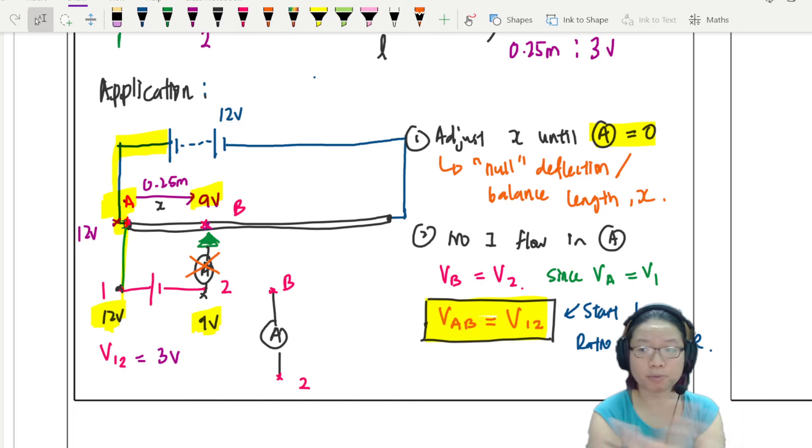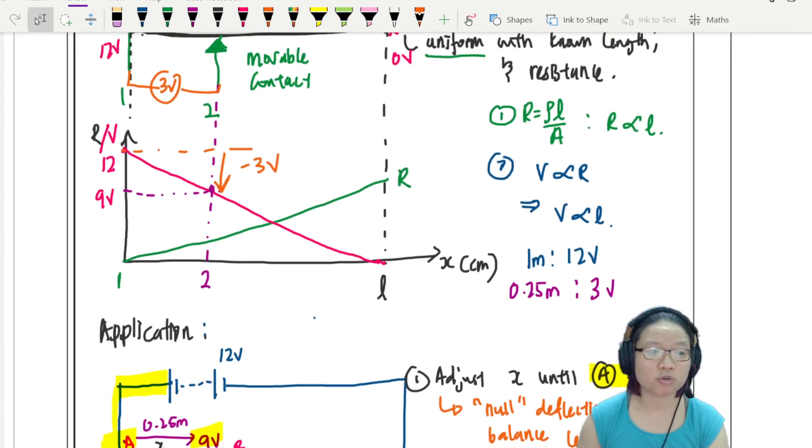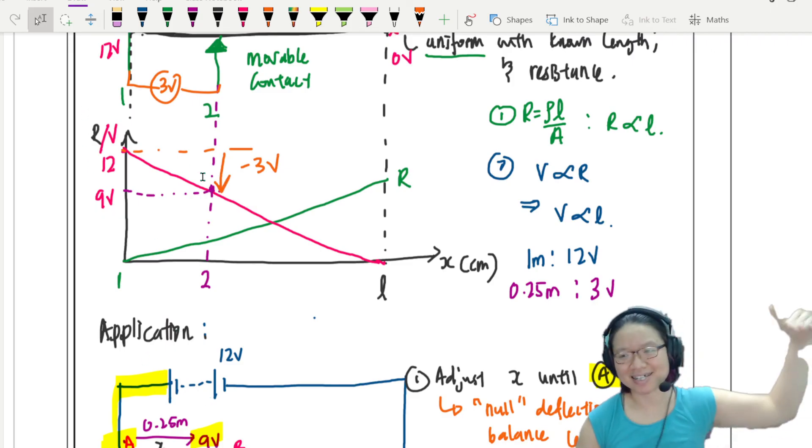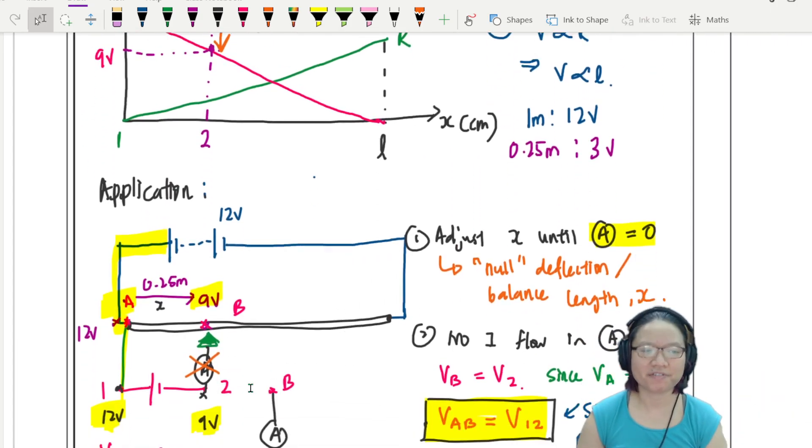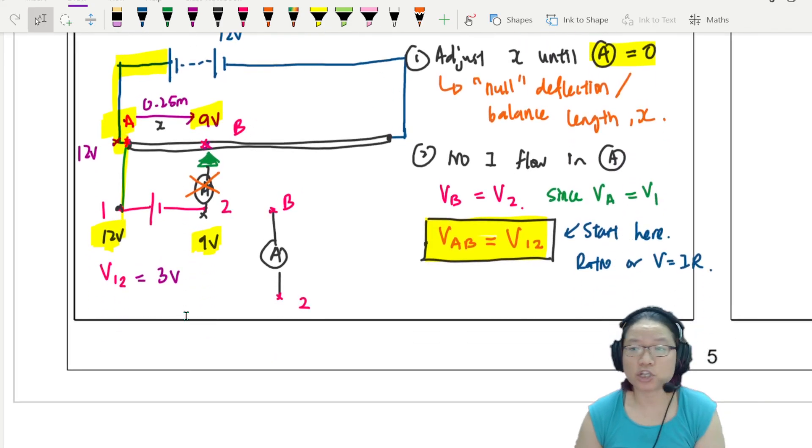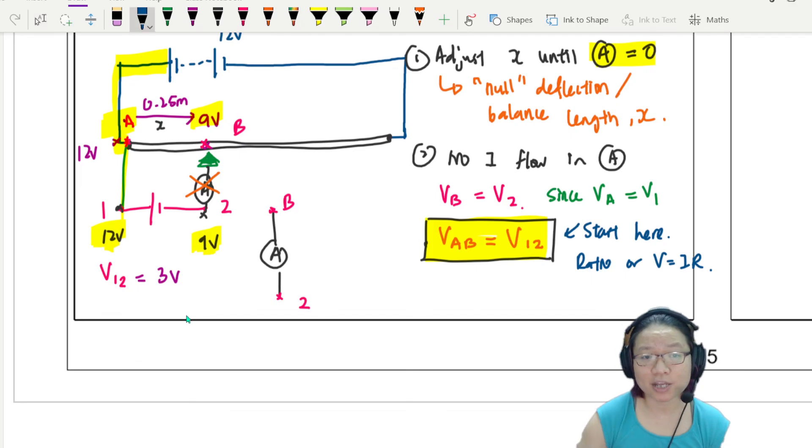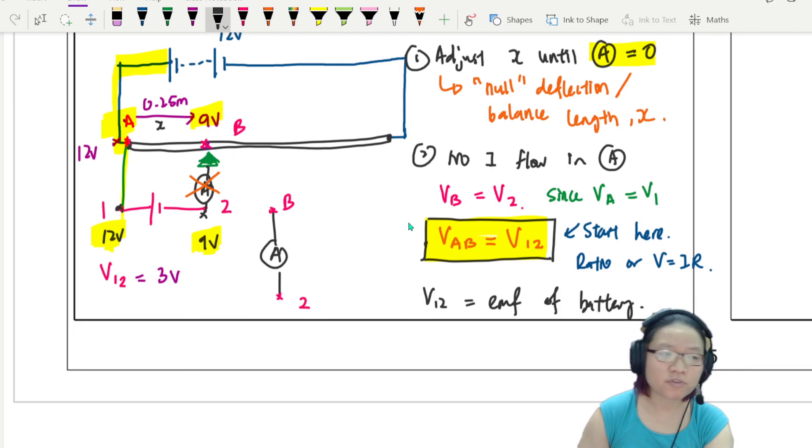And let's say for example, if I connect a voltmeter or an ammeter here, maybe I'll connect a sensitive ammeter. So right now, normally what we'll do is we will adjust the length or the value of x. So adjust the position of x until the ammeter reading is zero. And why do we want that? So if the ammeter reading is zero, which is something that we can clearly tell. We call this null deflection or zero point or balance point.